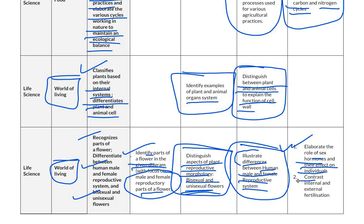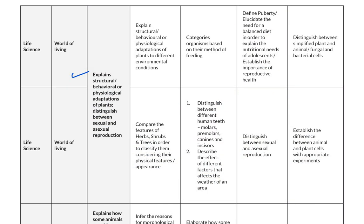Students also contrast internal and external fertilization. The next competency is to explain structural, behavioral and physiological adaptations of plants, and distinguish between sexual and asexual reproduction. For below basic level, students explain structural, behavioral and physiological adaptations of plants to different environmental conditions, and compare the features of herbs, shrubs and trees in order to classify them.